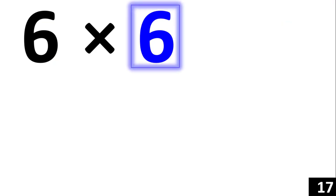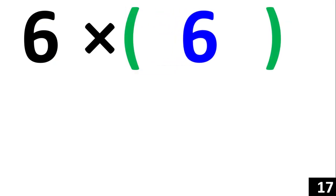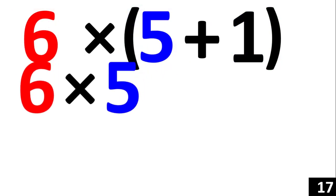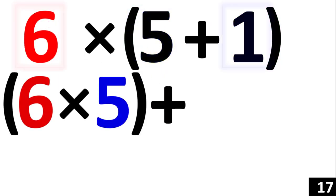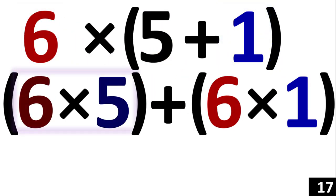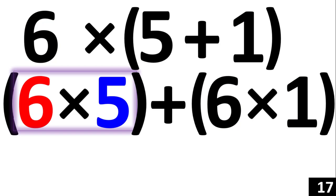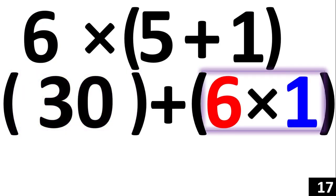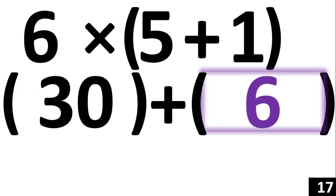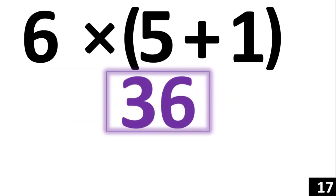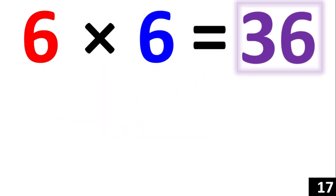6 times 6 is the same thing as 6 times 5 plus 1. Using the distributive property, we now have 6 times 5 plus 6 times 1. 6 times 5 is equal to 30, and 6 times 1 is equal to 6. Adding them together, 30 plus 6 is equal to 36. Therefore, 6 times 6 is equal to 36.